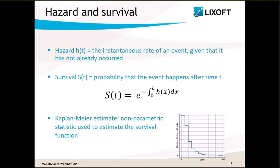Now we know the type of data we want to model, but how can we model time-to-event data? There are a few main concepts used for modeling TTE data with different approaches. Two functions have a key role in time-to-event analysis: the survival function and the hazard function. The hazard function is the instantaneous rate of an event given that it has not already occurred, and the survival function is the probability that the event happens after some time t, and both are linked by an equation.